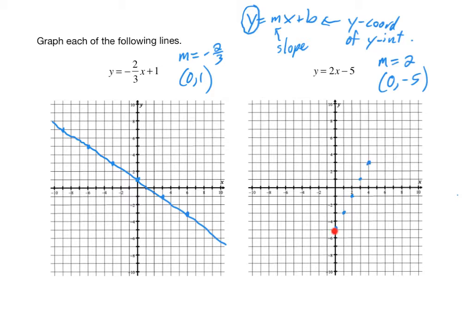Or, if we went down 2, we'd need to go left 1. You can see we now have this nice straight line. That is the graph of y equals 2x minus 5.